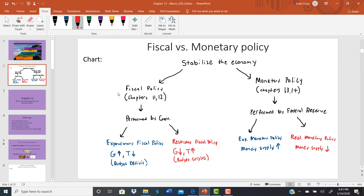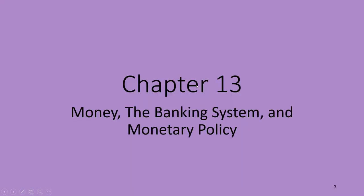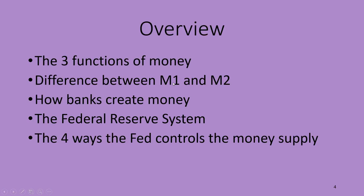We spent two chapters talking about fiscal policy. Let's now spend a couple chapters talking about monetary policy, starting with Chapter 13 called Money, the Banking System, and Monetary Policy. In this chapter, we're going to talk about the three functions of money in our economy, the difference between the M1 and M2 definitions of money supply, how banks create money through fractional reserve banking, and the Federal Reserve System and the four ways that the Fed controls the money supply.